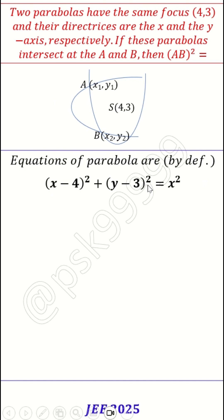So I get two equations. By the fundamental definition of parabola, x minus 4 whole square plus y minus 3 whole square, which is distance between x comma y here and S, and on the other side I get x square.